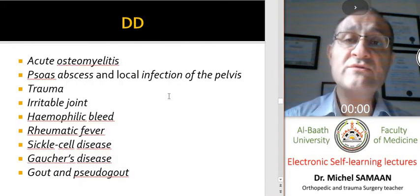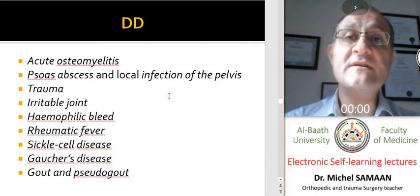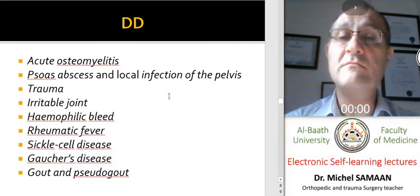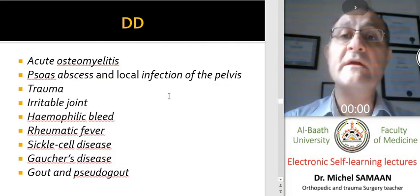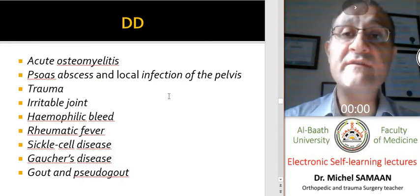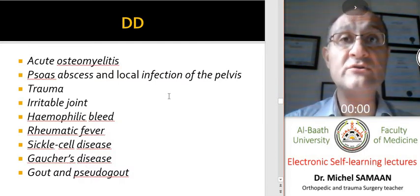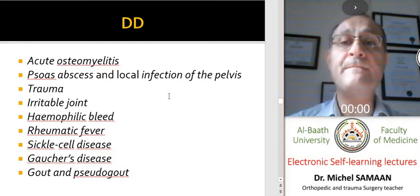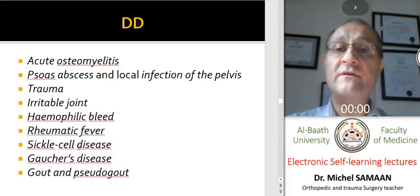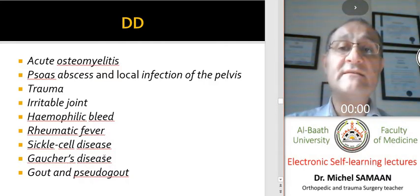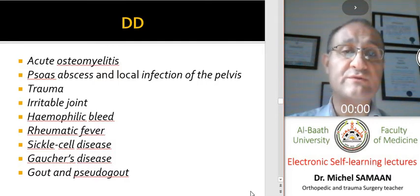We should differentiate septic arthritis from acute osteomyelitis, soft tissue infections, trauma, irritable joint, hemophilic bleeding, rheumatic fever, sickle cell disease, Gaucher disease, gout, and pseudogout.